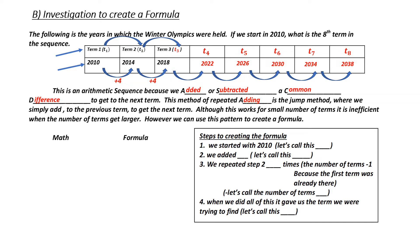We're going to do the math and the formula side by side to show you where these values come from. First, we started out with 2010. In our formula, how do we denote the first term? That's T to the 1. Next, to get to the next term, we added 4. What was 4? 4 was our common difference, or D.